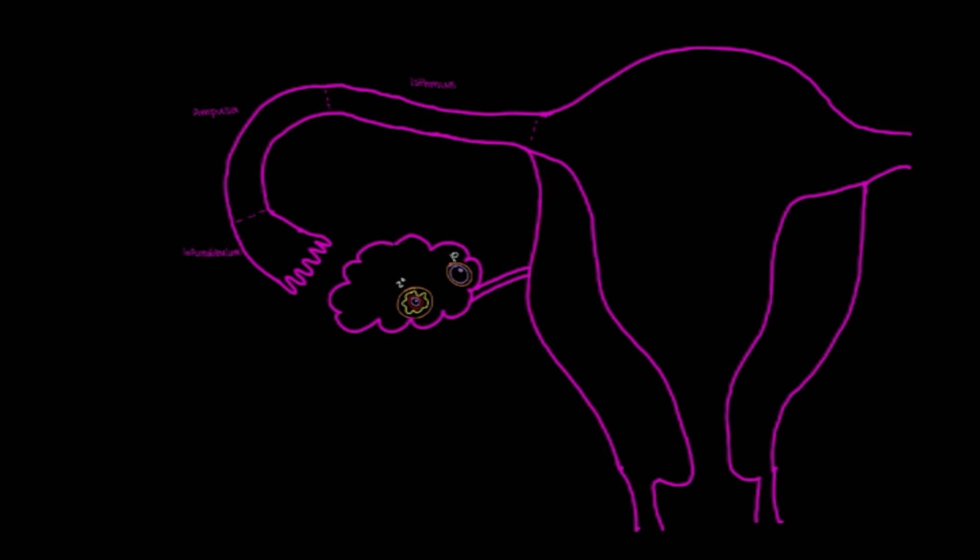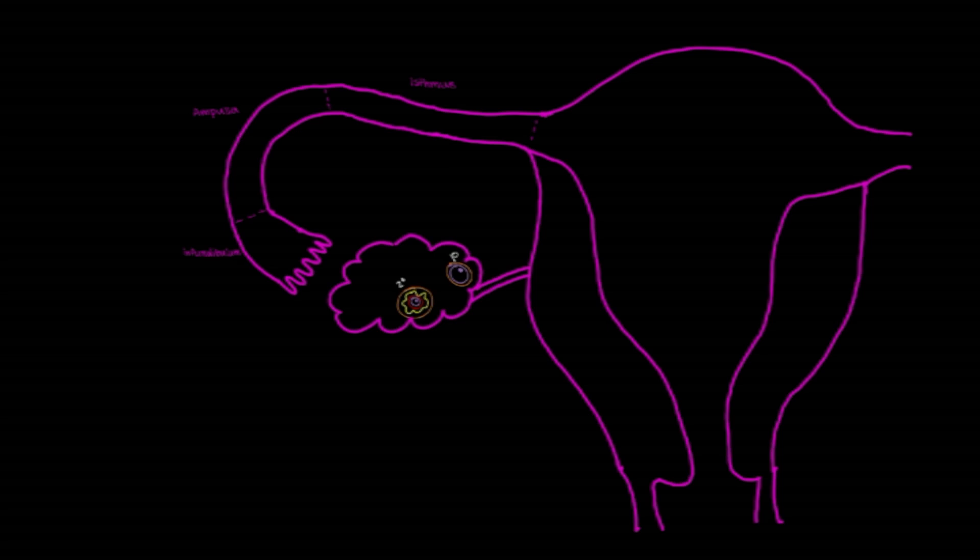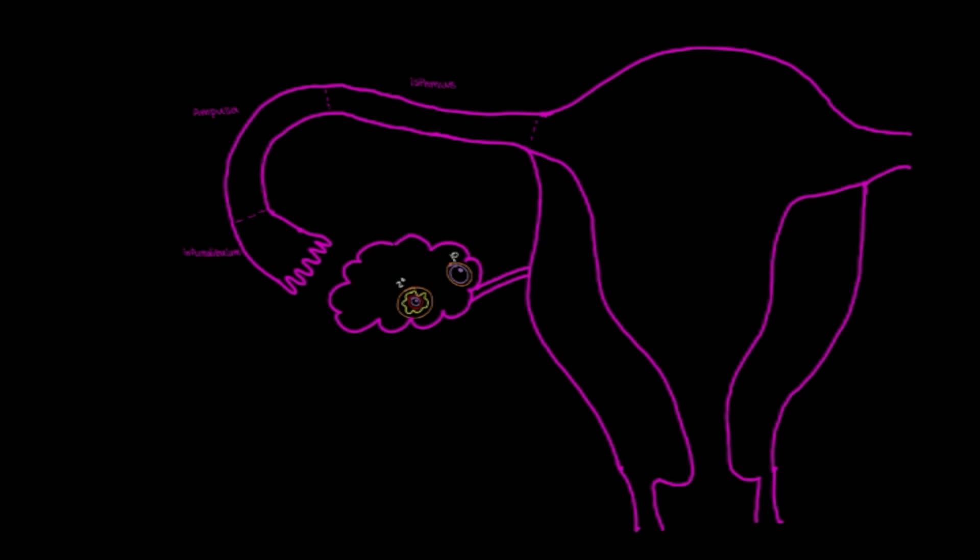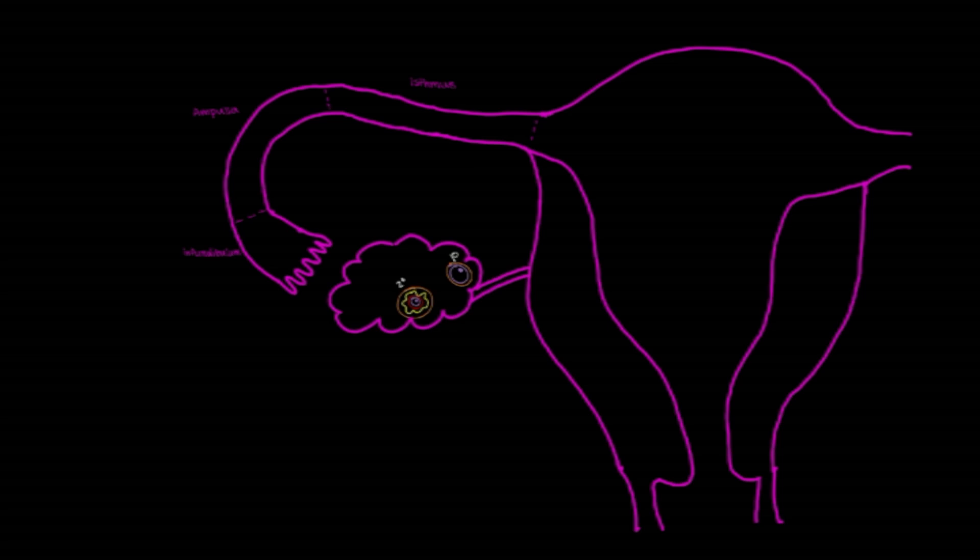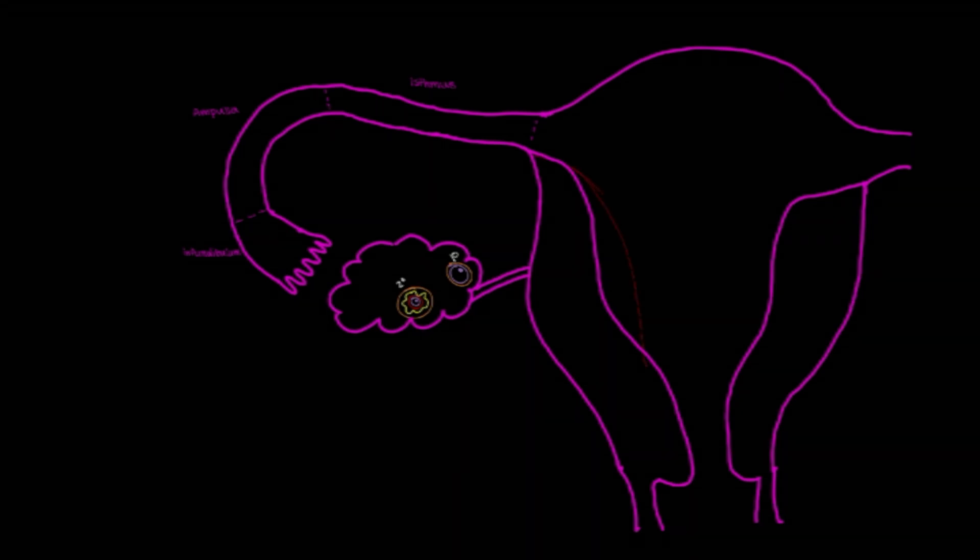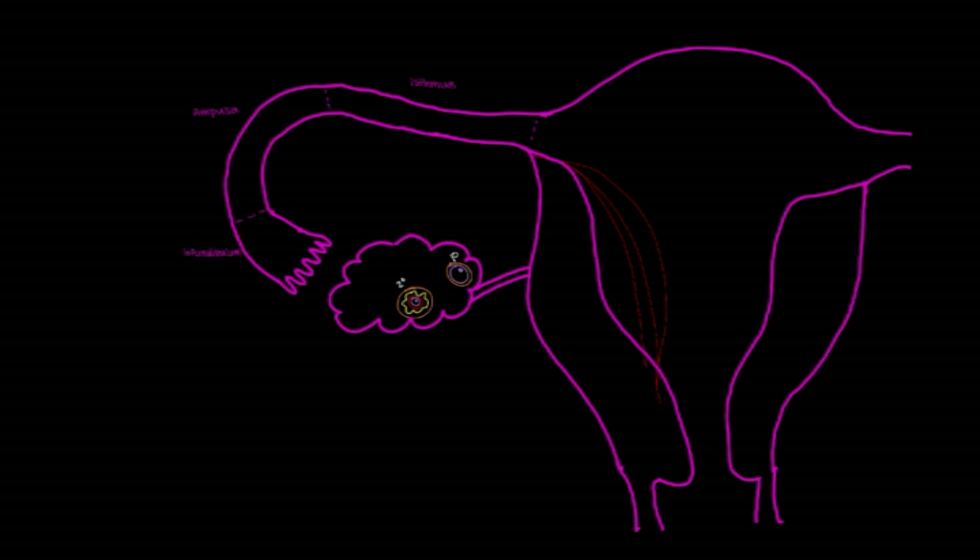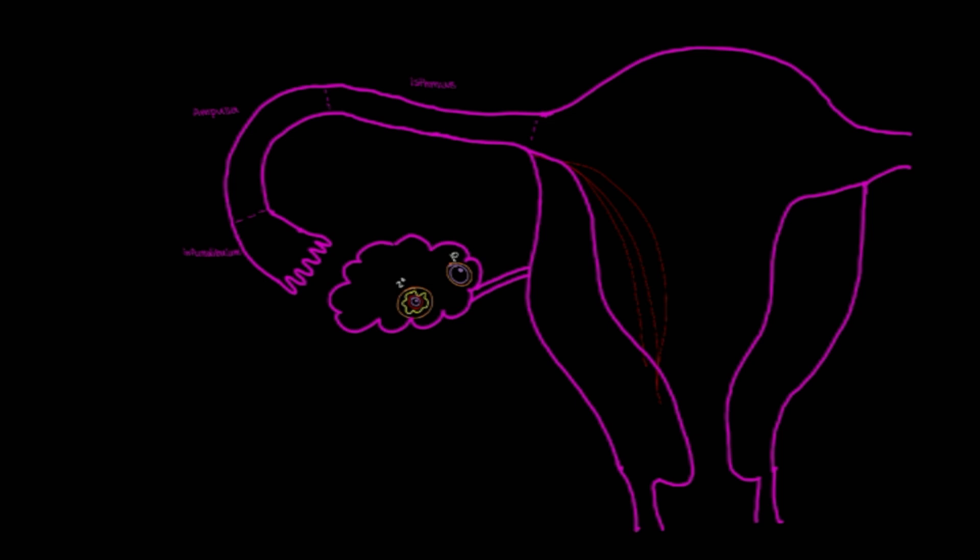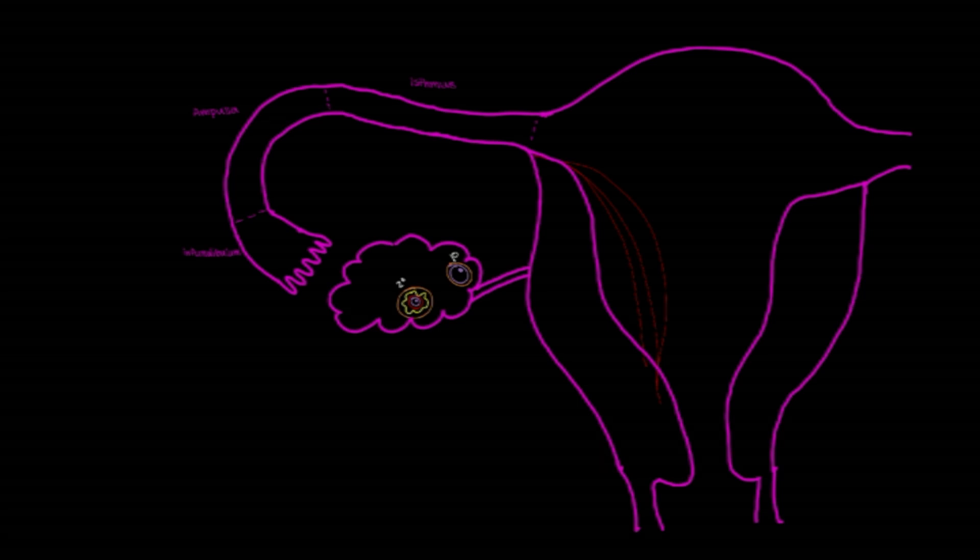We're specifically going to focus on the endometrium. At puberty, the female begins to undergo regular monthly cycles, and the endometrium will begin to thicken. And as the endometrium grows and becomes thicker, the tissue becomes more vascular, and it creates a nutrient-rich environment that is suitable for embryo implantation.